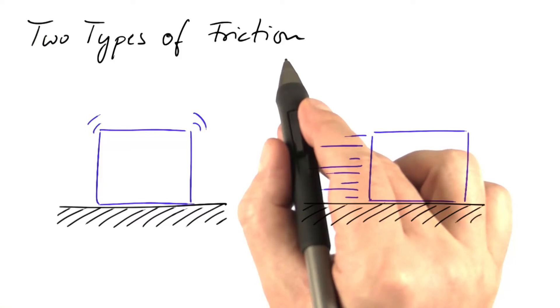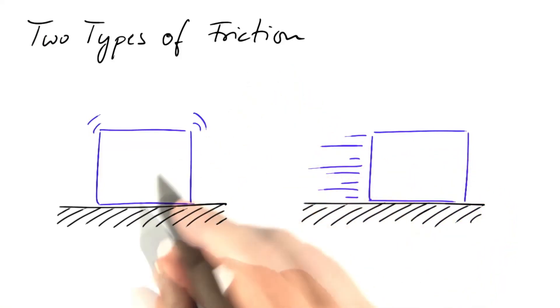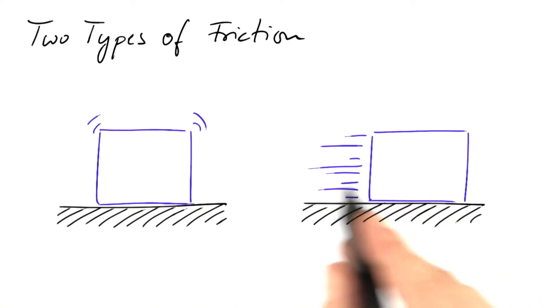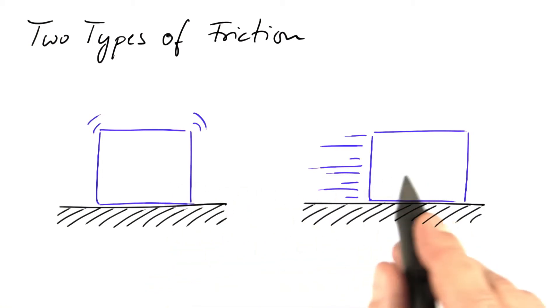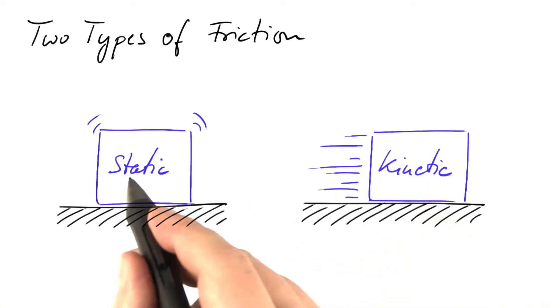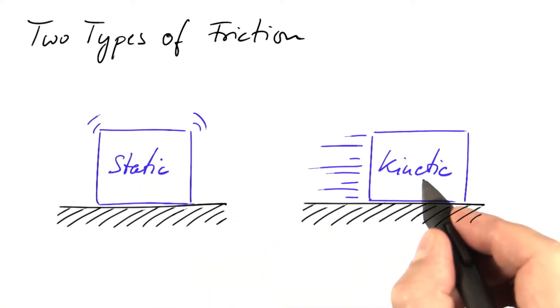Braking means to apply friction, lots of it. And for braking, it's vital to distinguish between two different regimes of friction, static friction and kinetic friction.